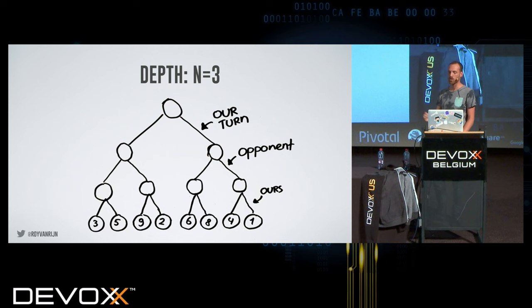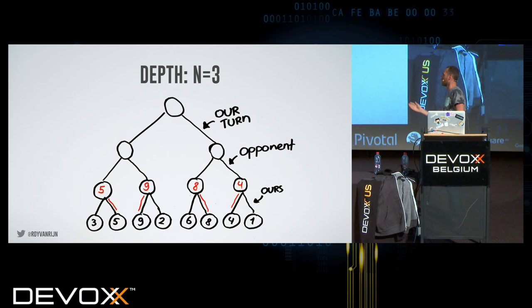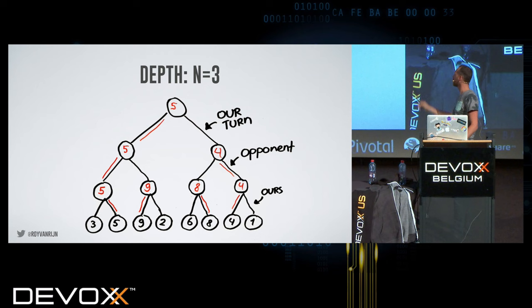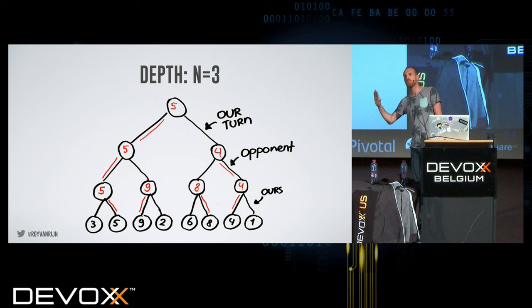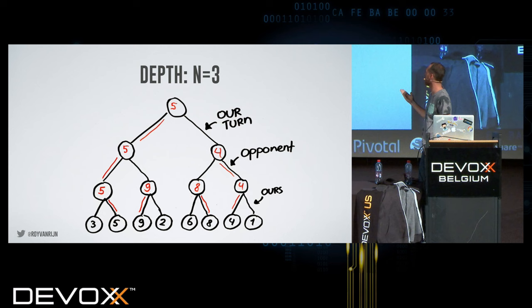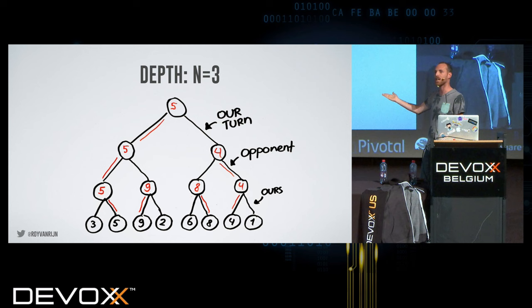When you do Minimax, you always start at the bottom. The bottom is our turn, and we can just pick the highest, because we want to maximize our score. Then we move one layer up — the opponent will pick the lower score, and we will pick the higher score. If you write the Minimax tree out, we'll end up with 5. That's the best we can do if both players play perfectly. If the opponent makes a mistake, we'll go to 9, obviously. But given perfect information, you'll always end up at 5.